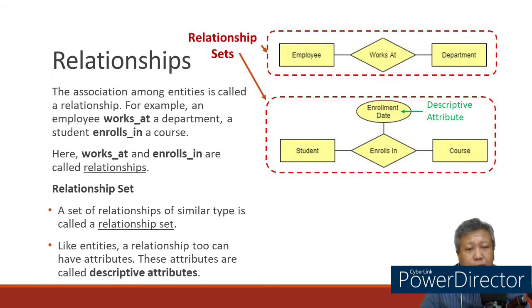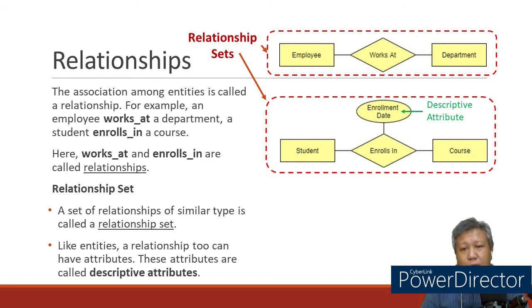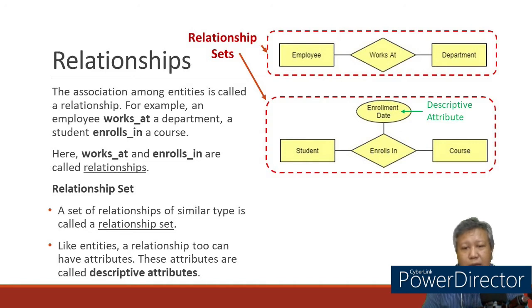How do we represent a relationship? We have two entities represented by rectangles. The relationship is placed inside a diamond. From the diamond, we draw lines to the two entities. For example, employees have a 'works at' relationship with department. Sometimes a relationship has an attribute that describes it — called a descriptive attribute. For instance, a student enrolls in a course, and the relationship 'enrolls in' can have a descriptive attribute.